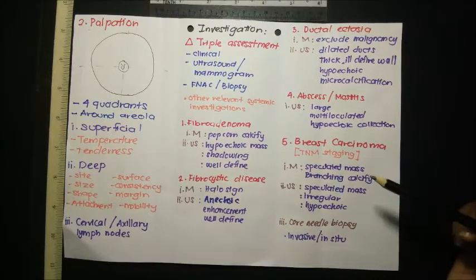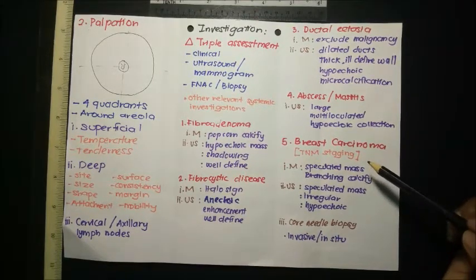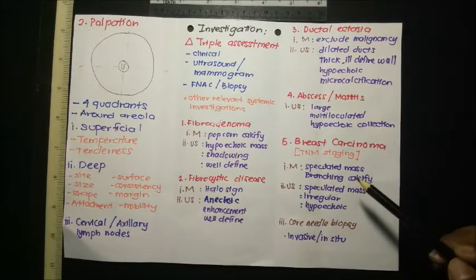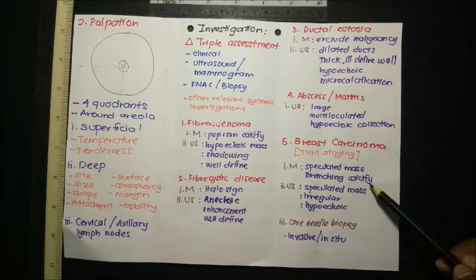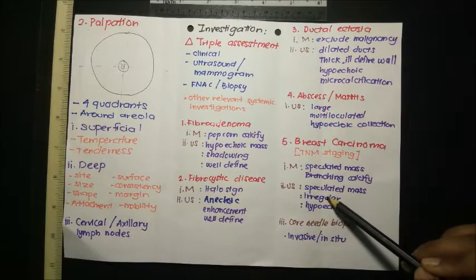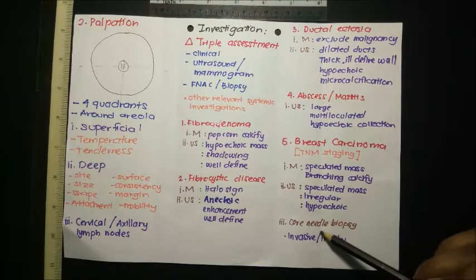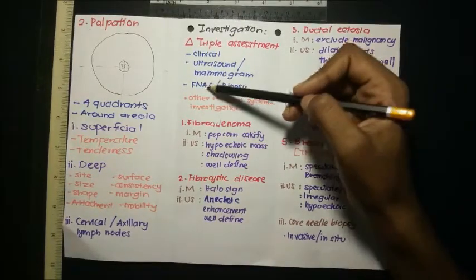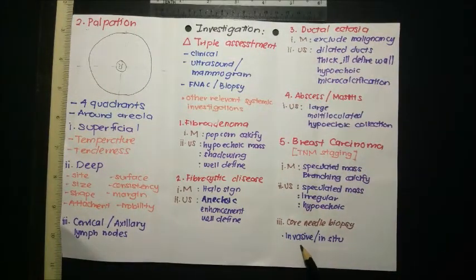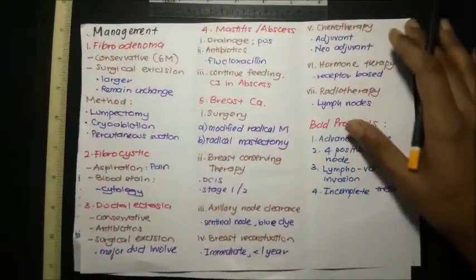For breast carcinoma, we perform TNM staging once diagnosed. On mammogram, a spiculated mass with branching calcification is seen. On ultrasound, it appears as a spiculated, irregular, hypoechoic mass. For biopsy, core needle biopsy is preferred over FNAC for breast carcinoma because FNAC cannot differentiate between invasive carcinoma and in-situ carcinoma.